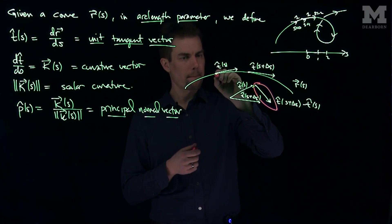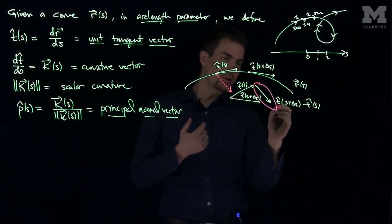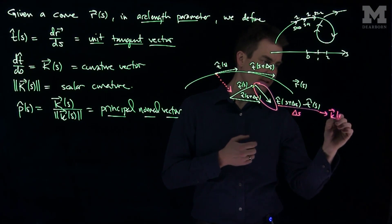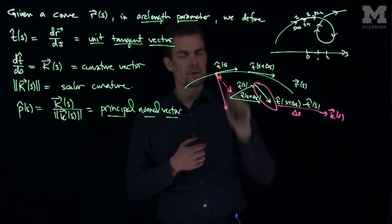So this vector over here, I can move it just right over here to that point. And so we see what's happening as s gets very, very small. If I divide this by delta s, this will converge to the curvature vector, k of s. And so this vector will be pointing inward to the curve perpendicular to the unit tangent vector.